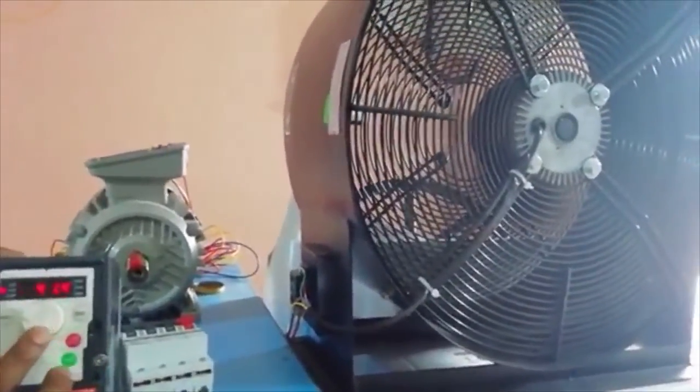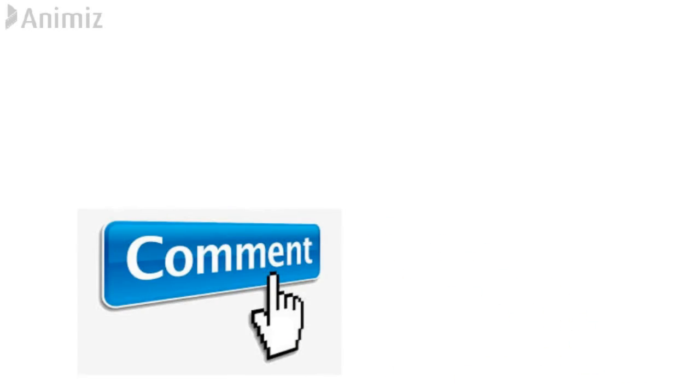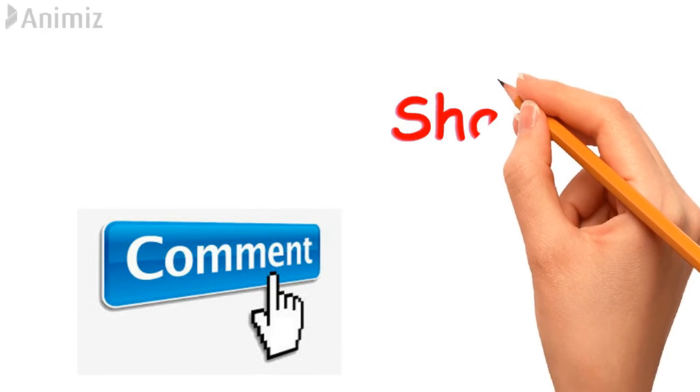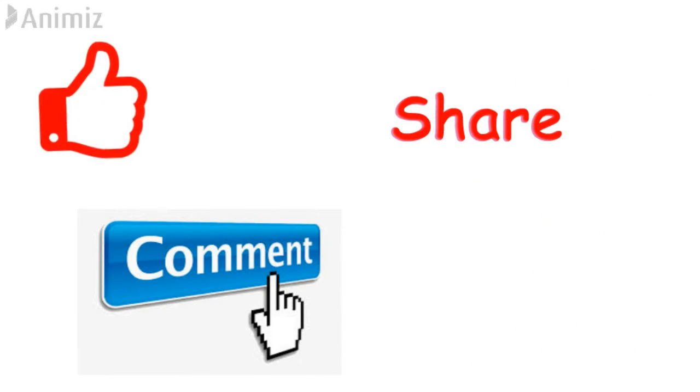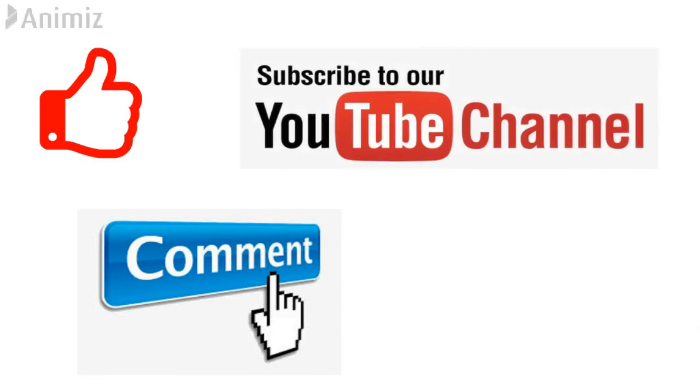Now if we increase the speed, the speed of the fan is also increasing. This is how V by f works. Comment below about how you like this video. Check out the links in the description box about more such videos. Do click the like button if you like the video. If you are new to this channel, subscribe Tech Talks and don't forget to hit the bell icon.